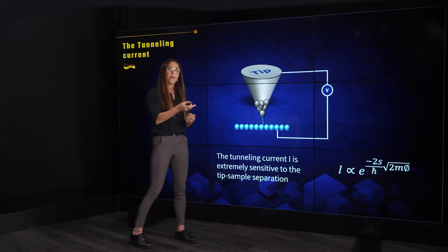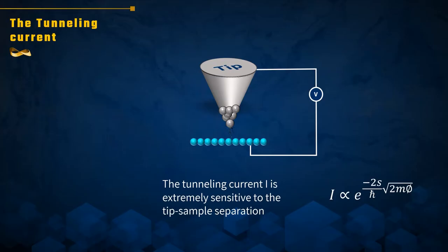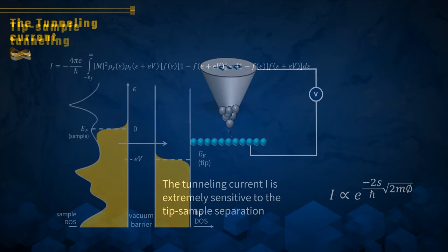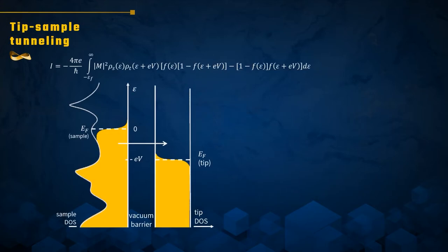This tunneling current is an extremely sensitive probe — it depends exponentially on the distance between the tip and the sample — and this is what allows us to measure height variations on the order of a fraction of an angstrom and to image the surface of the material down to atomic resolution. As for the lateral resolution, from the same reason the tunneling current is extremely local: it occurs from the last atom at the end of the tip, and therefore it allows the lateral resolution needed to measure atomic-scale features of the surface.